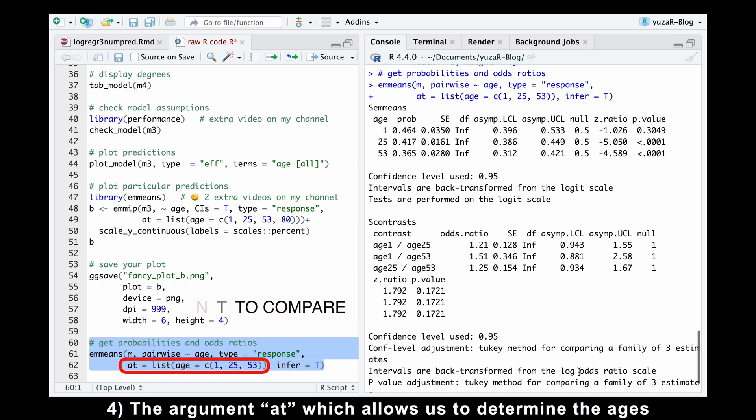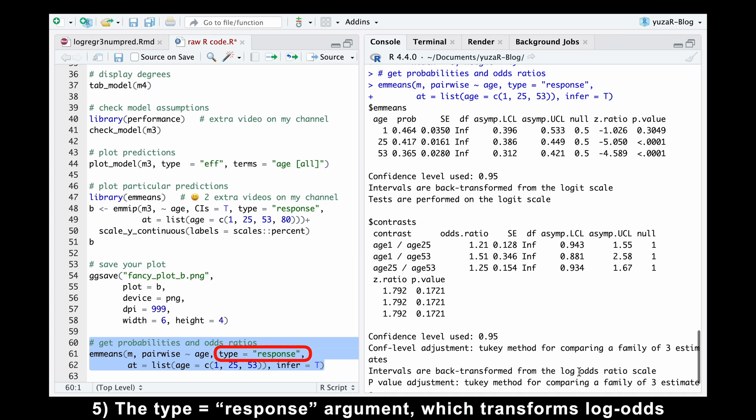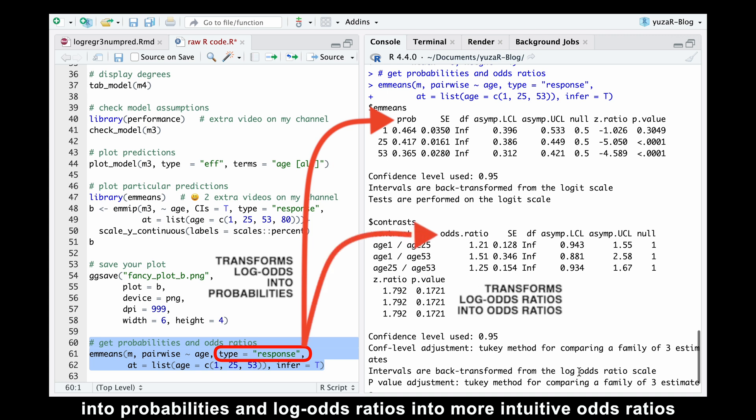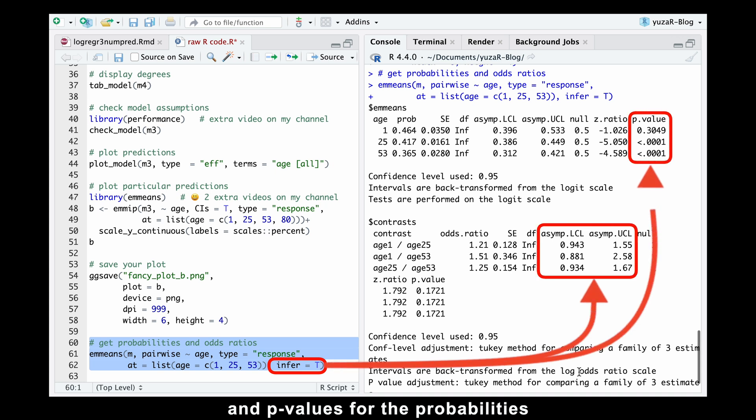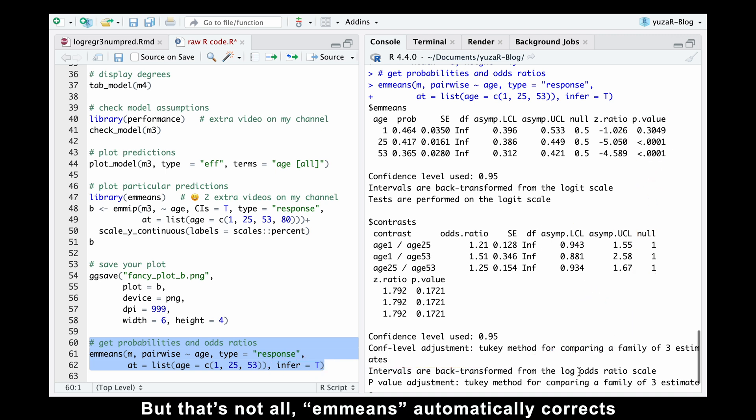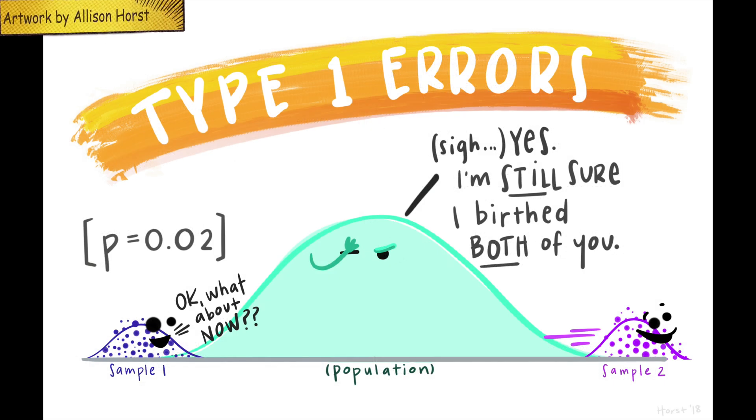the type equals response argument, which transforms log odds into probabilities and log odds ratios into more intuitive odds ratios. And finally, the infer equals true argument delivers the 95% confidence intervals for odds ratios and p-values for probabilities. But that's not all. emmeans automatically corrects those p-values for multiple comparisons using the Tukey method, which decreases the probability of discovering nonsense, also known as the type 1 error.